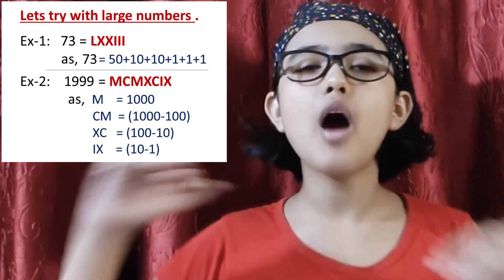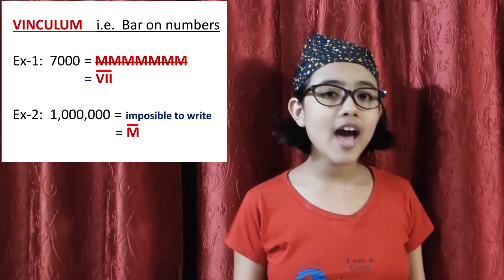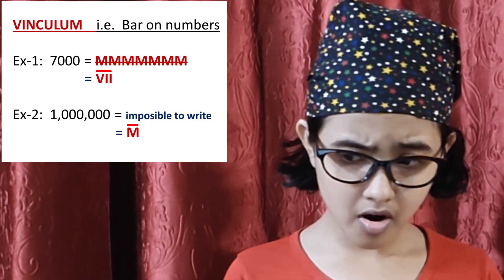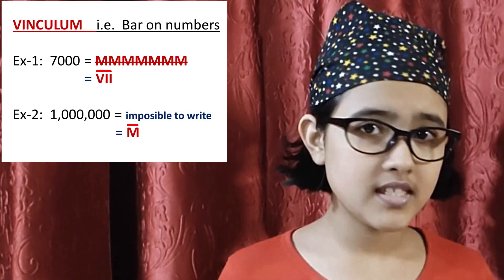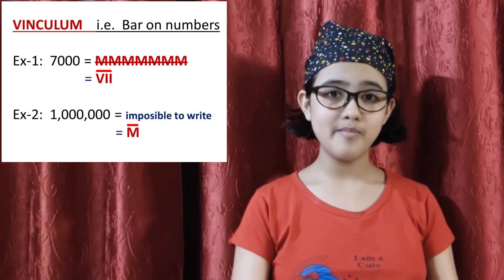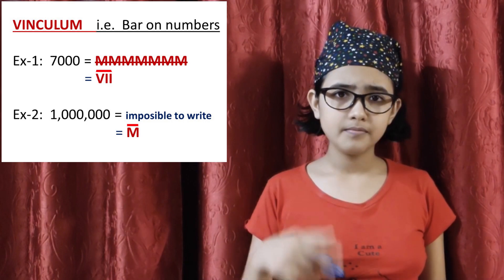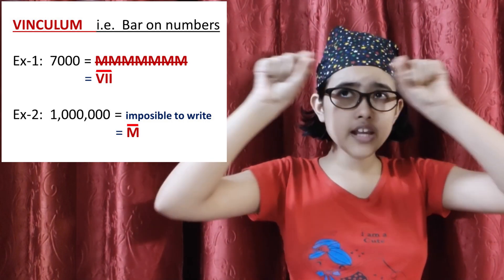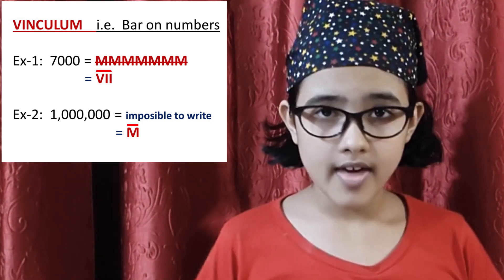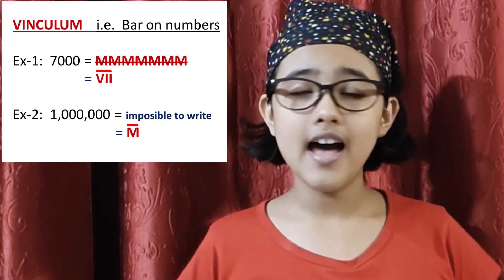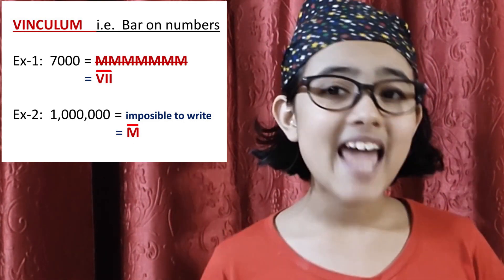This time we're going to learn about bar on numbers. This is called the vinculum system. Let me give you a number: 7,000. What is it? Well, it is not MMMMMMM with 7 Ms. Here comes the bar. Just like 5 is V, if you put a line on it, that becomes 5,000. Same happens with X. If you put a bar on the X sign, then we get the answer as 10,000.